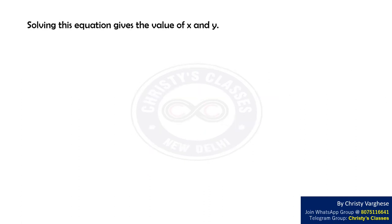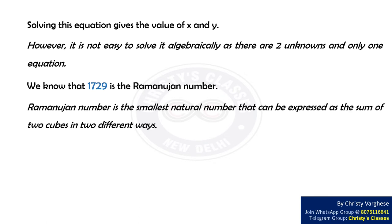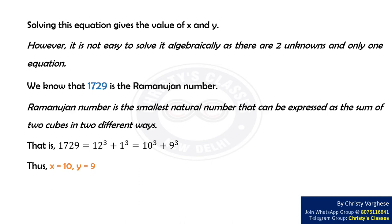Solving this equation gives the values of x and y. It is not easy to solve algebraically as there are two unknowns and only one equation. However, we know that 1729 is the Ramanujan number — the smallest natural number that can be expressed as the sum of two cubes in two different ways. That is, 1729 = 12³ + 1³, as well as 10³ + 9³. We can find 9 and 10 among the given options. Therefore, x equals 10 and y equals 9, and option B is the right answer.